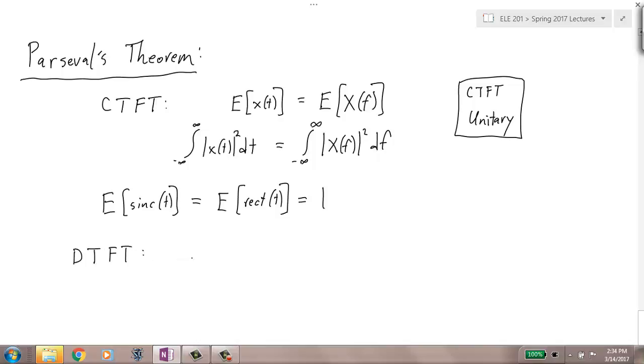So for the discrete time Fourier transform, of course, the energy of x of n equals, it's a little bit different because x of f is periodic now. And so it's not going to have an energy. So we'll fill in what that is in a minute. Let me give the formula.